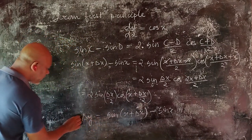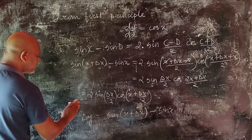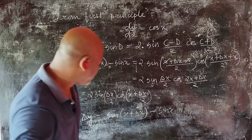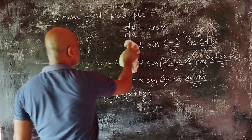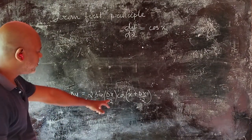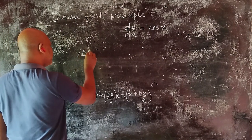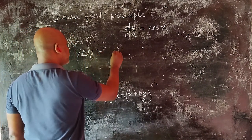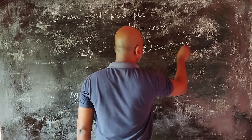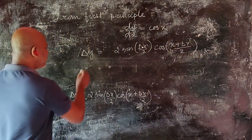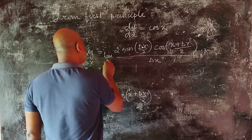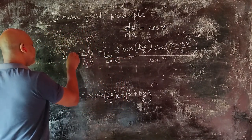So delta y is equal to 2 sin(delta x by 2) into cos(x plus delta x by 2). As per the first principle formula, dividing both sides by delta x and taking the limit as delta x tends to 0.